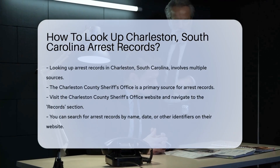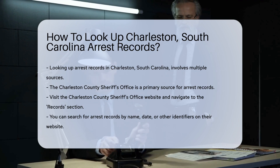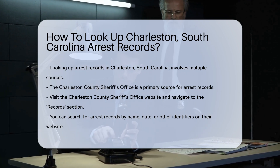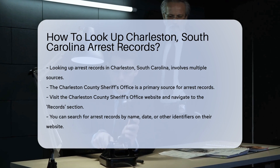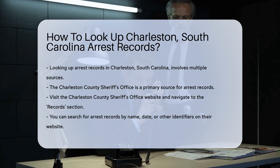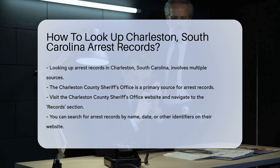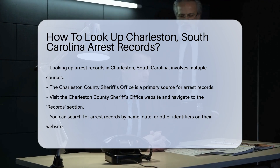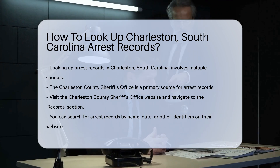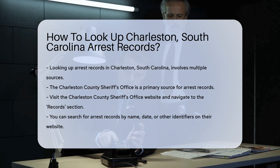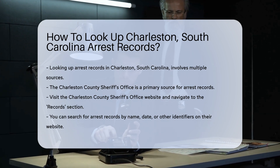Looking up arrest records in Charleston, South Carolina can be a straightforward process. First, you need to know where to go. The Charleston County Sheriff's Office is a primary source for arrest records. Their website offers a range of services, including access to arrest records. To begin, visit the Charleston County Sheriff's Office website. Once there, navigate to the Records section. This section provides various public records, including arrest records. You can search by name, date, or other identifiers.